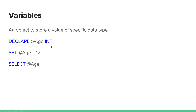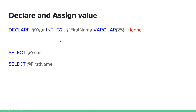So when declaring a variable, I declare age as an integer and assign it a value. Then I declare another variable — first name — as a variable type, varchar of length 25, and assign a value to it. Then I use SELECT to display the first name value.